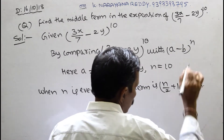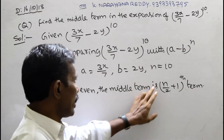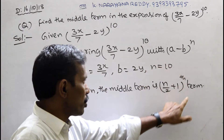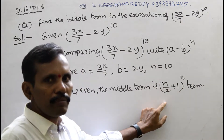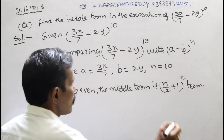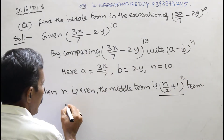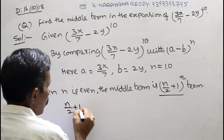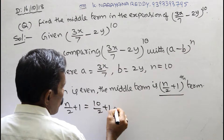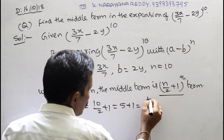This is very important — remember this to find the middle term when n is even. Now, n/2 + 1 = 10/2 + 1 = 5 + 1 = 6. So the middle term is the 6th term.